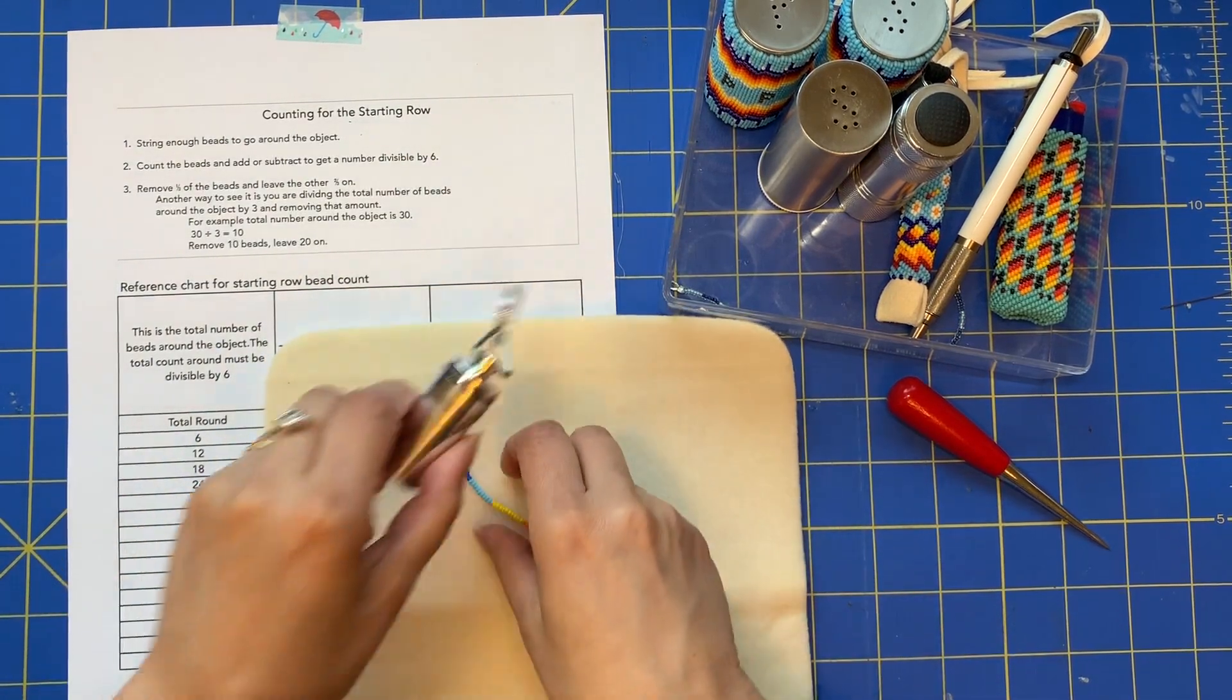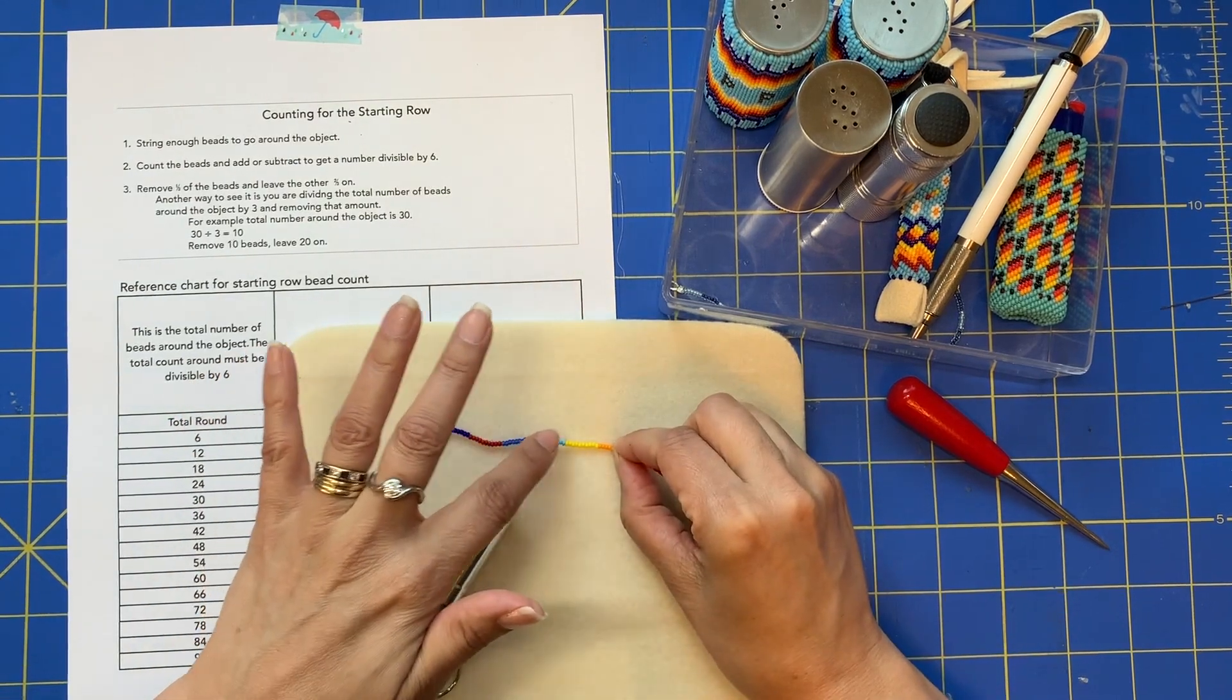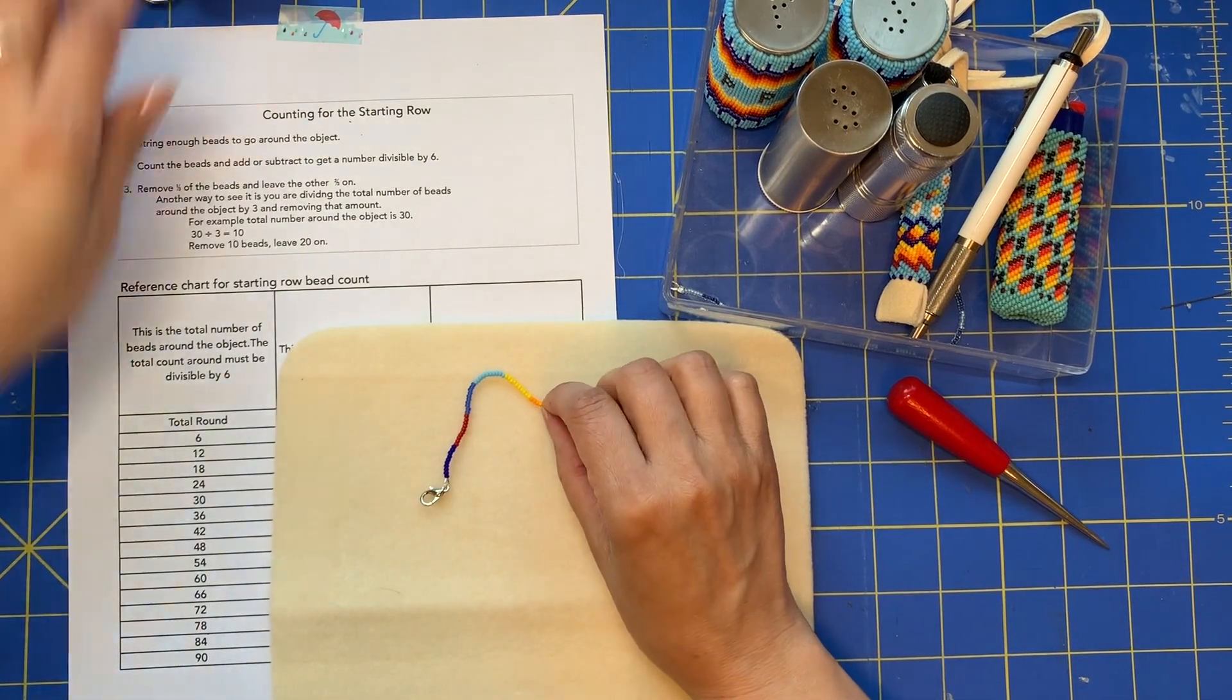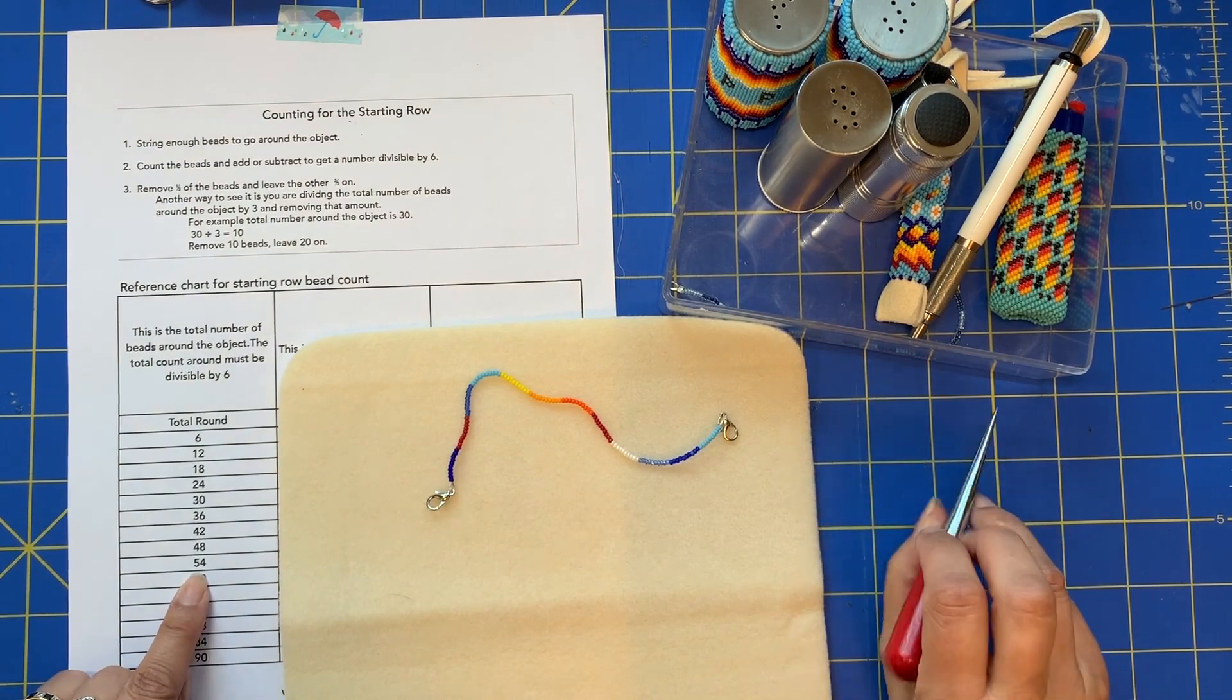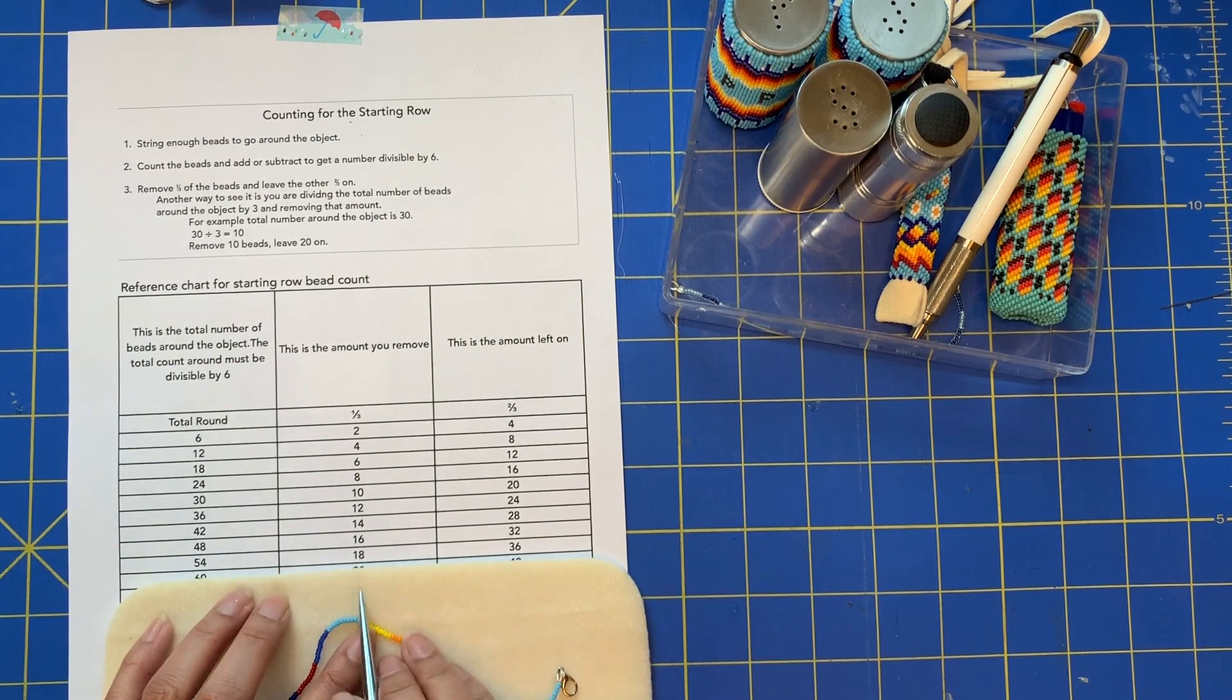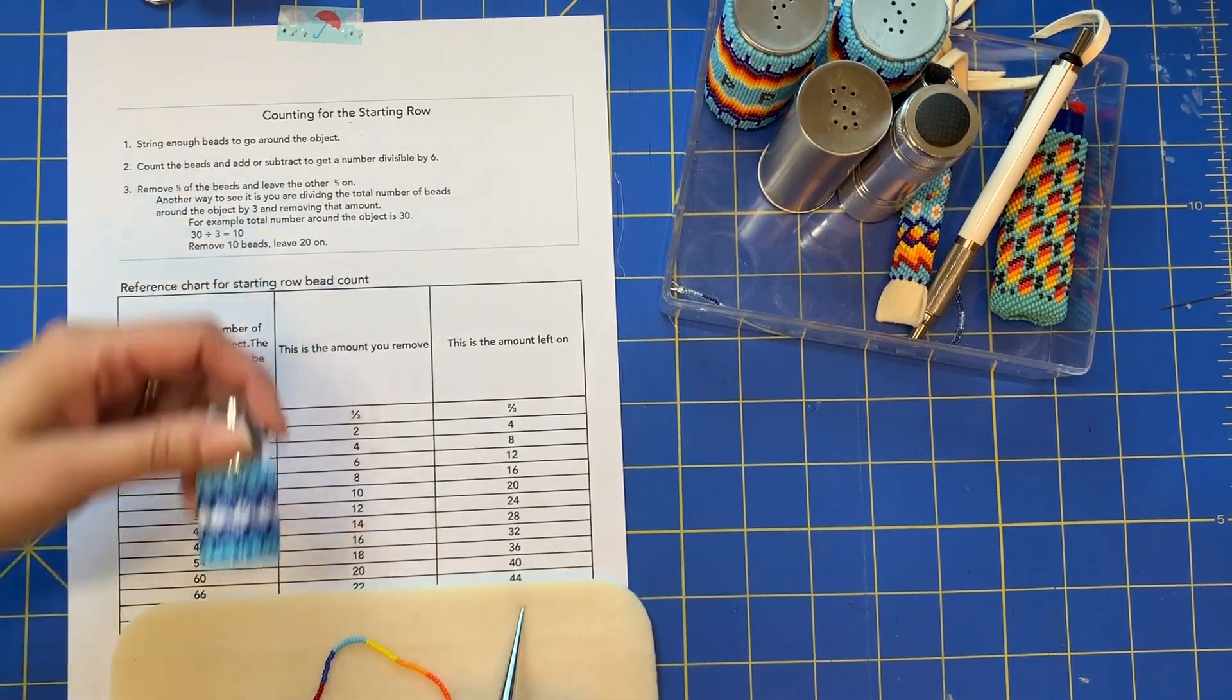So for this little pill fob, I already forgot how much we counted that for... it's about 56. So then I would come to this list. These are all numbers divisible by six. 56 is closest to 54. So that means I would have 54 all the way around to start my starting row.